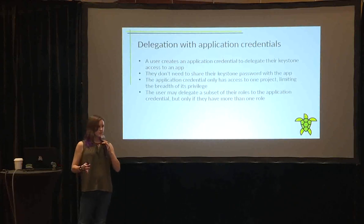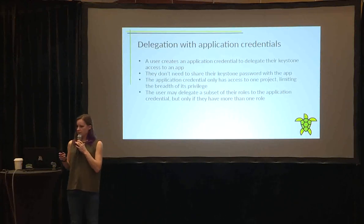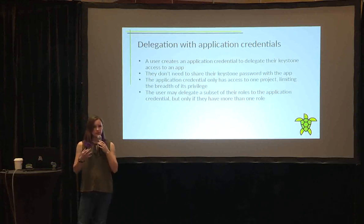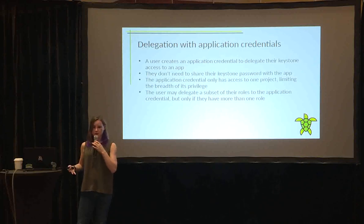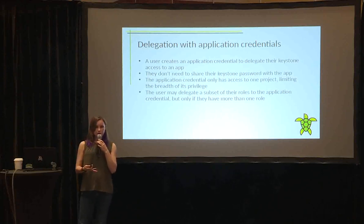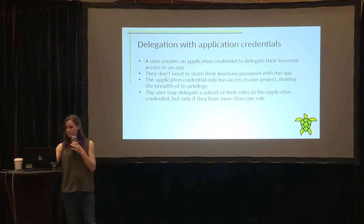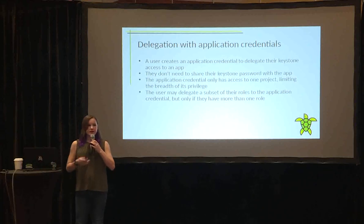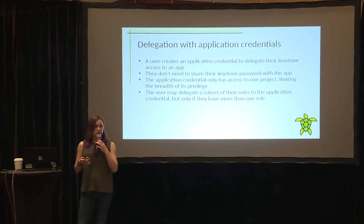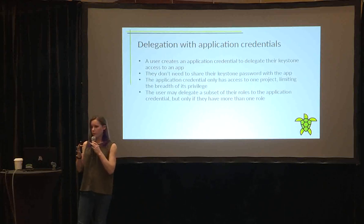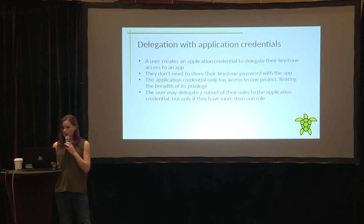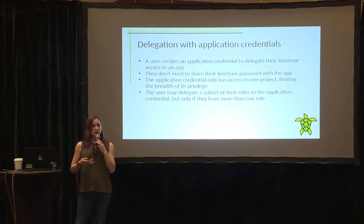In the first iteration of the application credentials feature, the user can delegate a subset of their role assignments to the application credential. For example, if the user has a member role and a reader role on a particular project, and the application is just a monitoring type of application, the user could delegate just the reader role to their application. But this interface is still kind of clunky, because it doesn't allow users to have fine-grained control over their applications or do an explicit whitelist of actions. The user still needs to go to their cloud administrator and ask for a new role assignment if they don't already have a role that meets their needs.